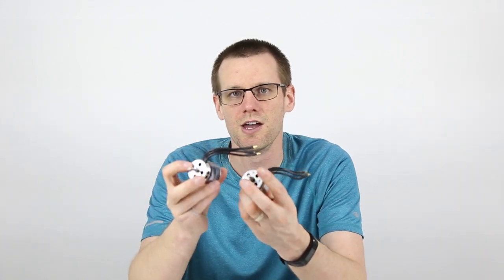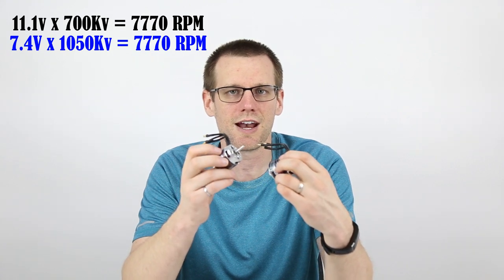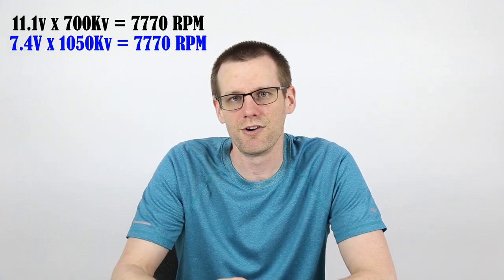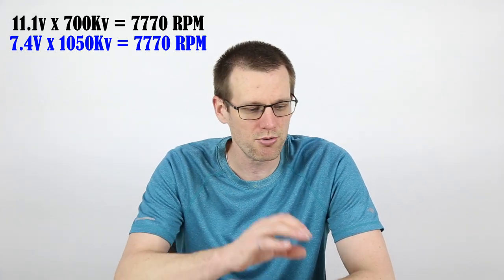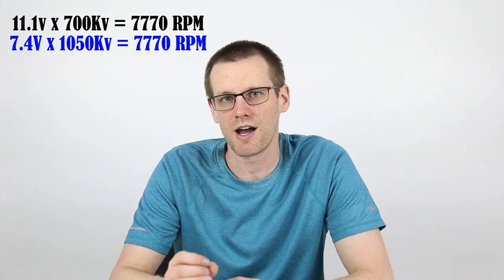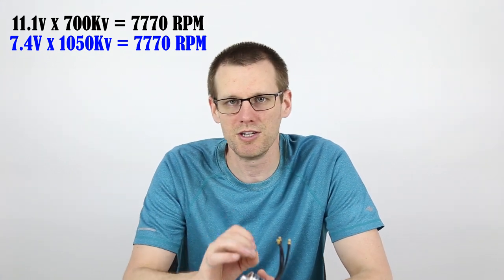So these are the two motors that we are going to test today. One of them is 1050 kV and the other one is 700 kV. And that's quite important because it was really difficult to actually find two motors that have the kV we need in order to have just the right offset versus our 2S and 3S battery packs. Both of these motors will end up outputting 7,770 rpm at their nominal voltage. So let's go ahead and throw them on the dyno and see exactly how much power output we get both mechanically from each one of these motors.